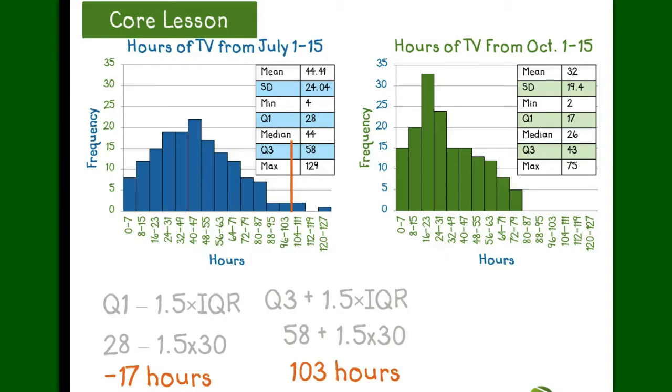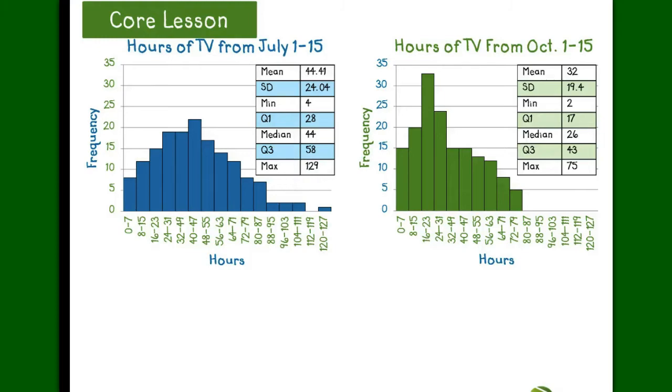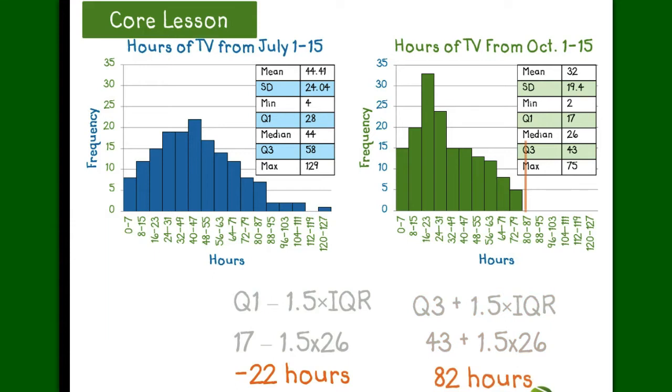In October, interquartile range is 26, so when we look for outliers, we find that they have to be below negative 22 hours, or above 82 hours, which means that we have none in October.